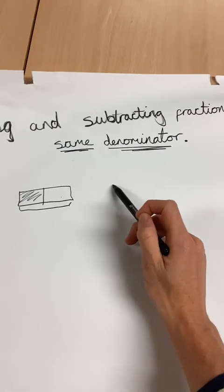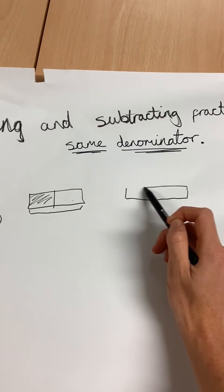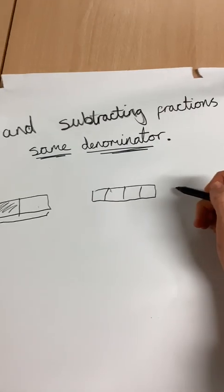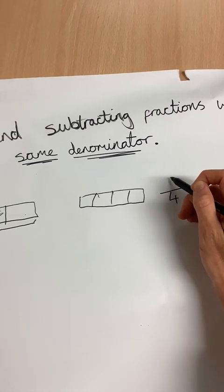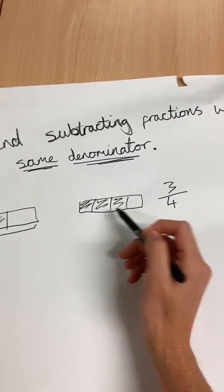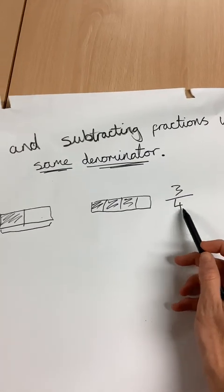So if I chop a shape into four, then I have a four on the bottom. Back to a three, then I colour in three. But it is the denominator we are worrying about.